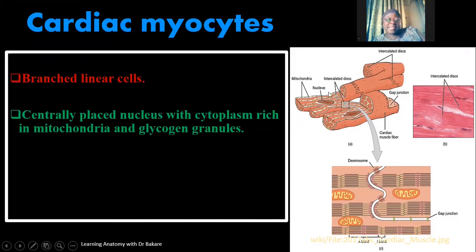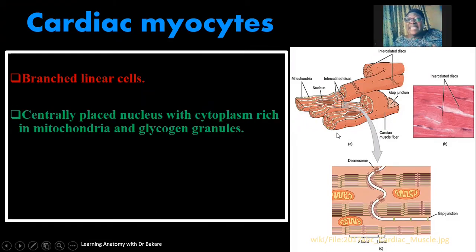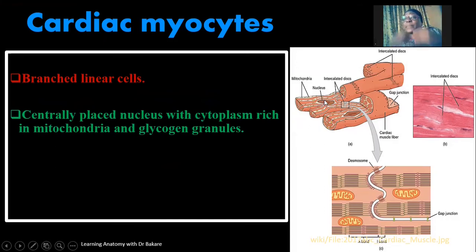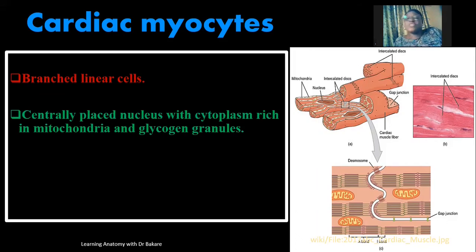The cardiac myocyte, which is the cell forming the cardiac muscle, has a centrally placed nucleus — seen centrally placed within the cytoplasm. Other organelles prominent within the cytoplasm of the cardiac myocyte include mitochondria, seen in large numbers, and also glycogen granules. The mitochondria are needed to provide energy in the form of ATP.